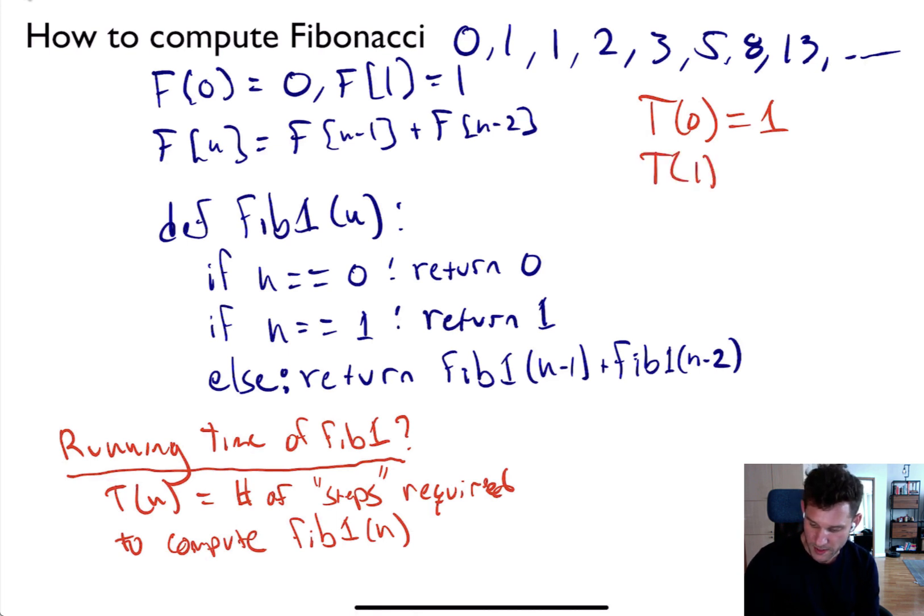T(1) equals two steps, right? Because when you input one, first you check if n equals zero, then you return zero. Then you check if n equals one, that returns true, and then you return one. So it takes about two steps.